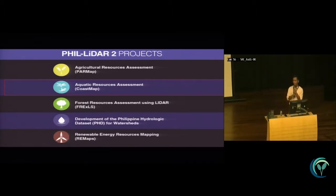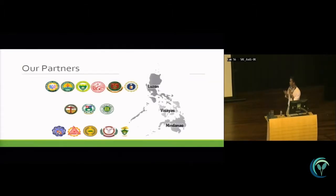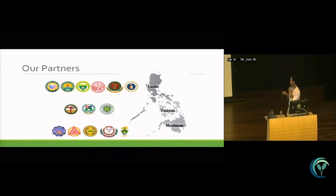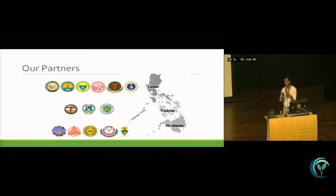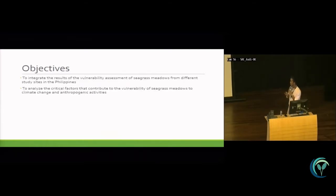One of our objectives, aside from mapping coastal resources using LiDAR, is to develop a framework for vulnerability assessment. We have partners from different parts of the Philippines. The Philippines is clustered into three big groups of islands — Luzon, Visayas, and Mindanao — and these are the schools that are our partners for each cluster. Each school conducted a vulnerability assessment for one site in their region. The objective of this presentation is to integrate the results of the vulnerability assessment of seagrass meadows from different study sites in the Philippines.